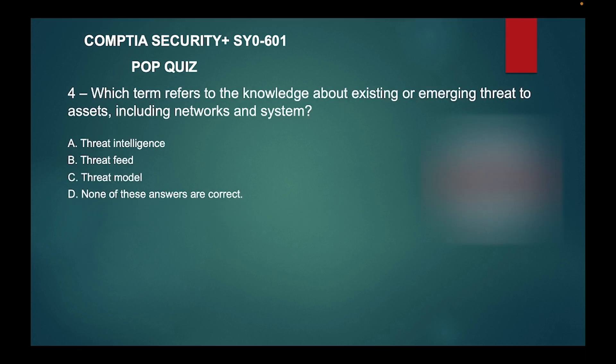Number four: which term refers to the knowledge about existing and emerging threats to assets, including networks and systems? A) Threat intelligence, B) Threat feed, C) Threat model, or D) None of these answers are correct?